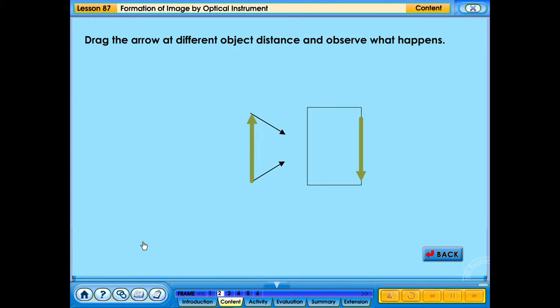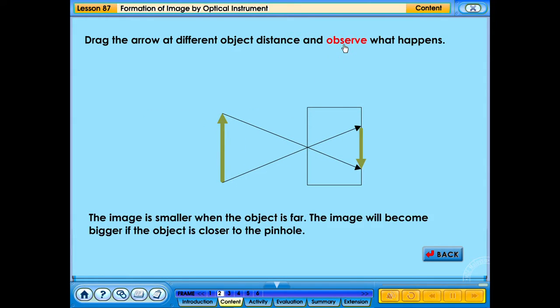Drag the arrow at different object distance and observe what happens. The image is smaller when the object is far. The image will become bigger if the object is closer to the pinhole.